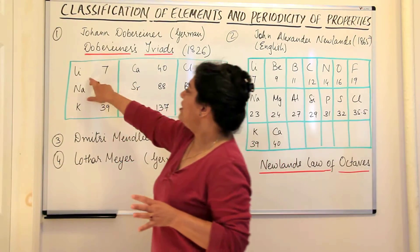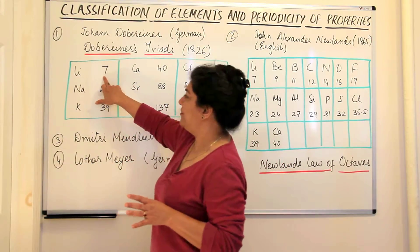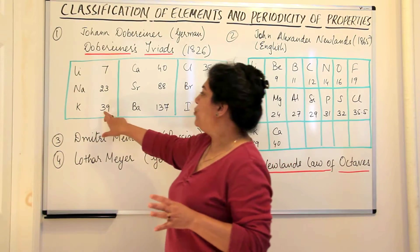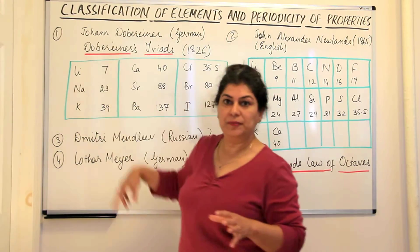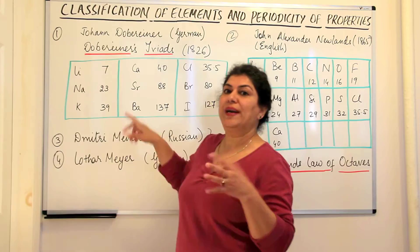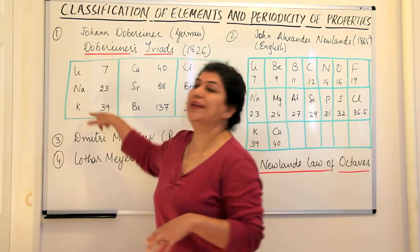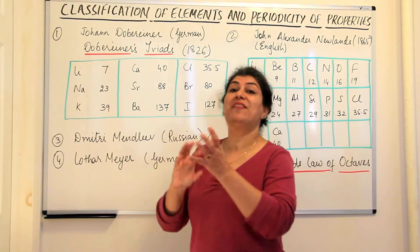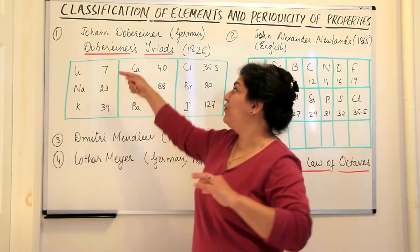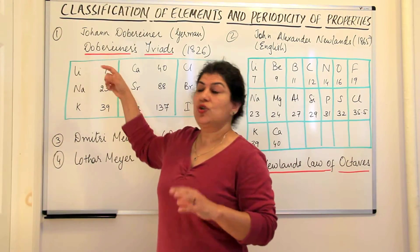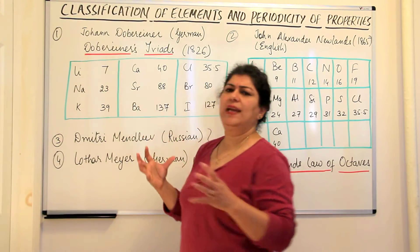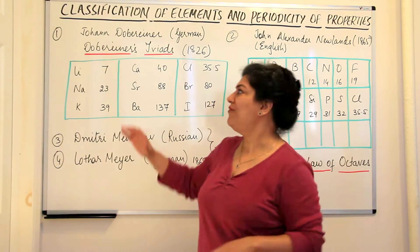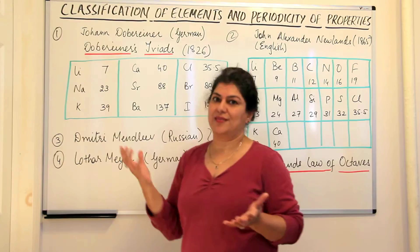For example, lithium has a mass of 7, sodium is 23, and potassium is 39. If you add 39 and 7 and divide it by 2, you get 23. That is, 23 is the average of the other two. So in a way, the mass of the element in the middle was somewhere in the middle of the two masses.